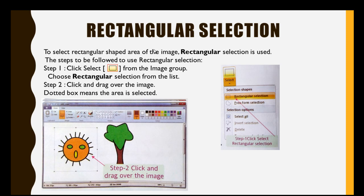Now come back to the screen and click and drag your mouse over the image or over the area of the drawing until it is selected. The appearance of a dotted box around the image means this area is selected.